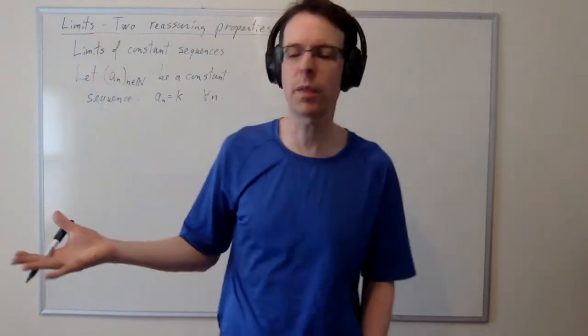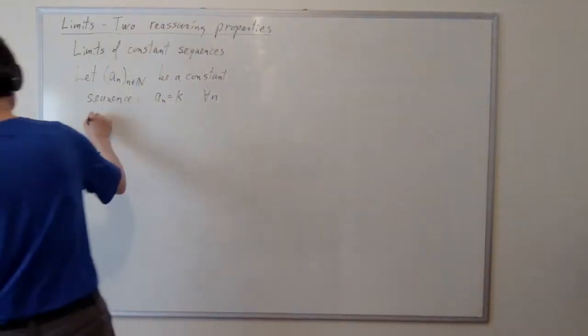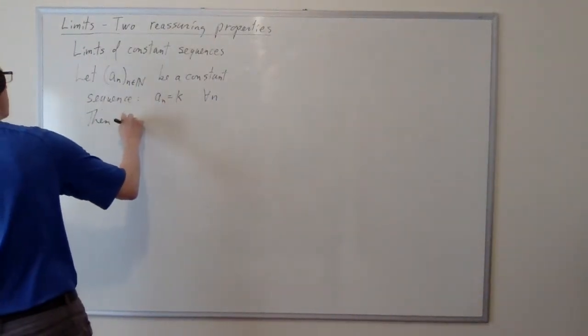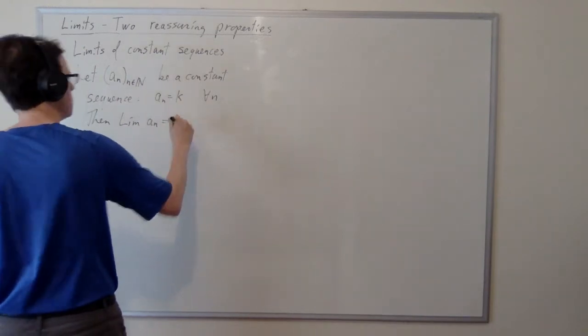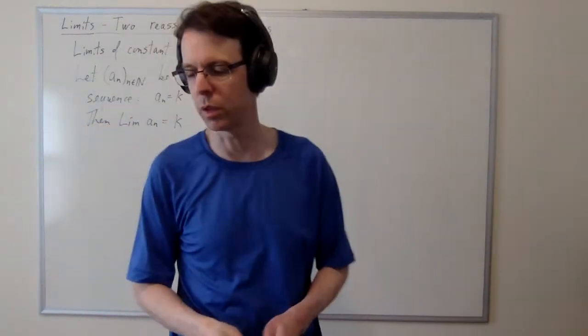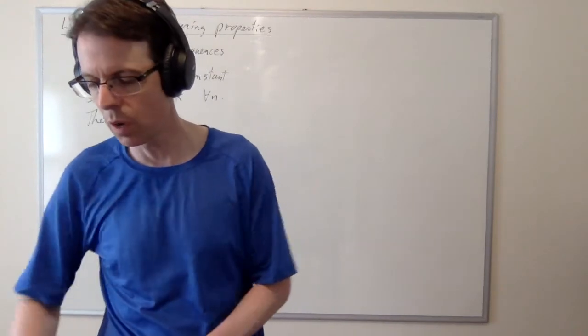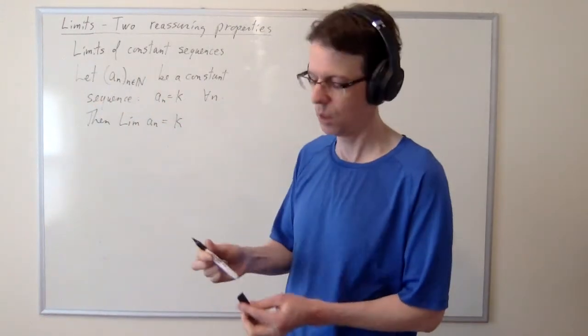Then what do we need to say about that? We need to say that it converges. So we're going to say then the limit of a_n is equal to, of course, that constant value that all the sequence terms are equal to. So that's obvious, but still warrants proof.